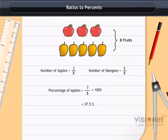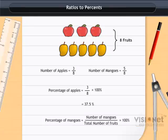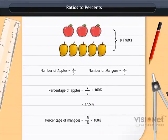Similarly, we can calculate the percentage of mangoes. Percentage of mangoes equals number of mangoes divided by total number of fruits times 100%, which equals 62.5%.